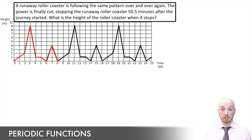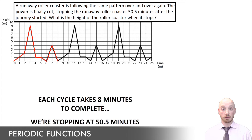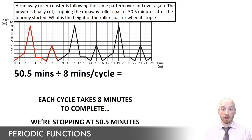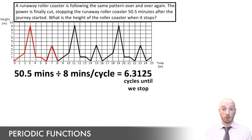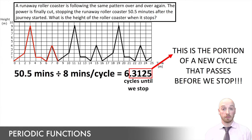Now let's solve what they're asking: what's the height of the rollercoaster when the power is finally cut, 50.5 minutes after the rollercoaster sets off from zero? We need to figure out how long this is into the start of a new cycle. Because every cycle is identical, we divide 50.5 minutes by the length of one full cycle — eight minutes — and get 6.3125. That means 6.3125 cycles pass until the function stops. The decimal 0.3125 is how far into a new cycle we're stopping, so it's six full cycles and 0.3125 of a new one.